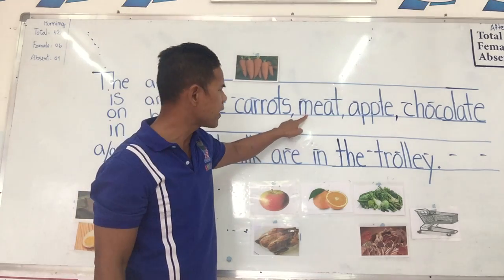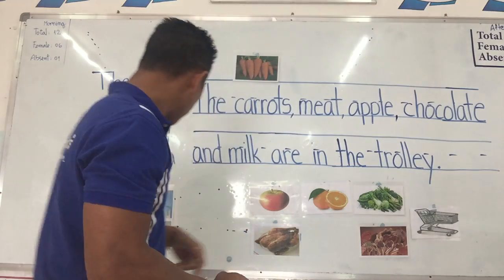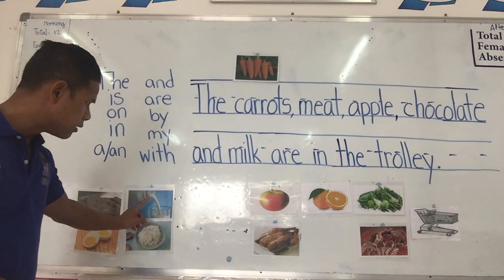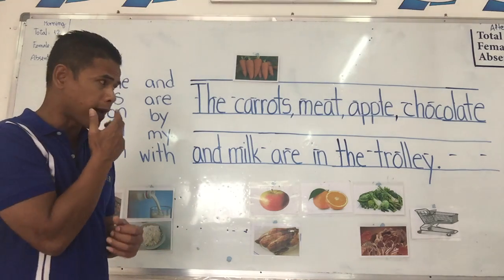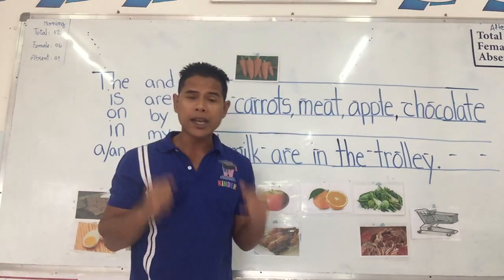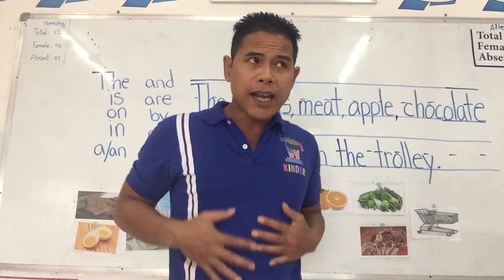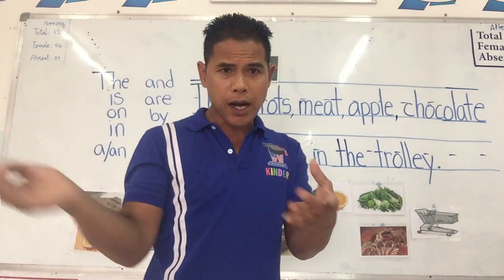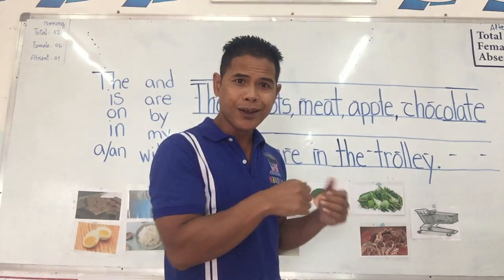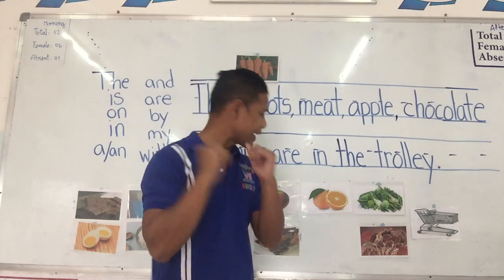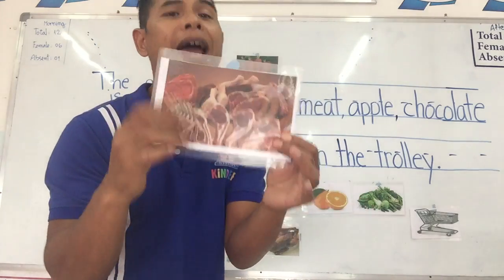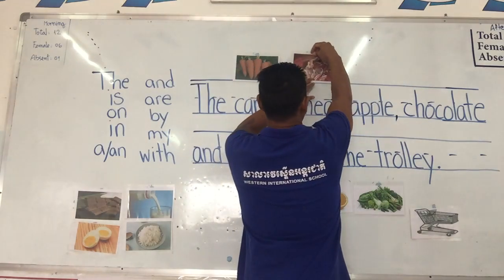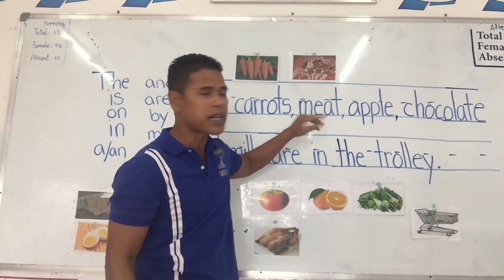Next one starts with the letter M — M makes the sound 'ma.' Which one makes the 'ma' sound up here? Milk starts with M, yes, but I'll give you another hint. This one you eat every single day. It has ribs, beef, chicken, pork chop, steak, sausage — what is it? It is meat. All of this is called meat. M-E-A-T, meat.